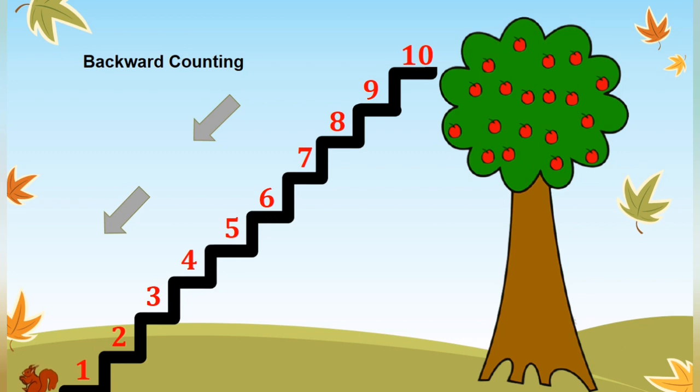Now, let us understand backward counting. When we count in reverse direction, we are going backwards. Hence, it is called backward counting. When we count backwards, we take away 1 from each number. When we count backwards, number is small in value.